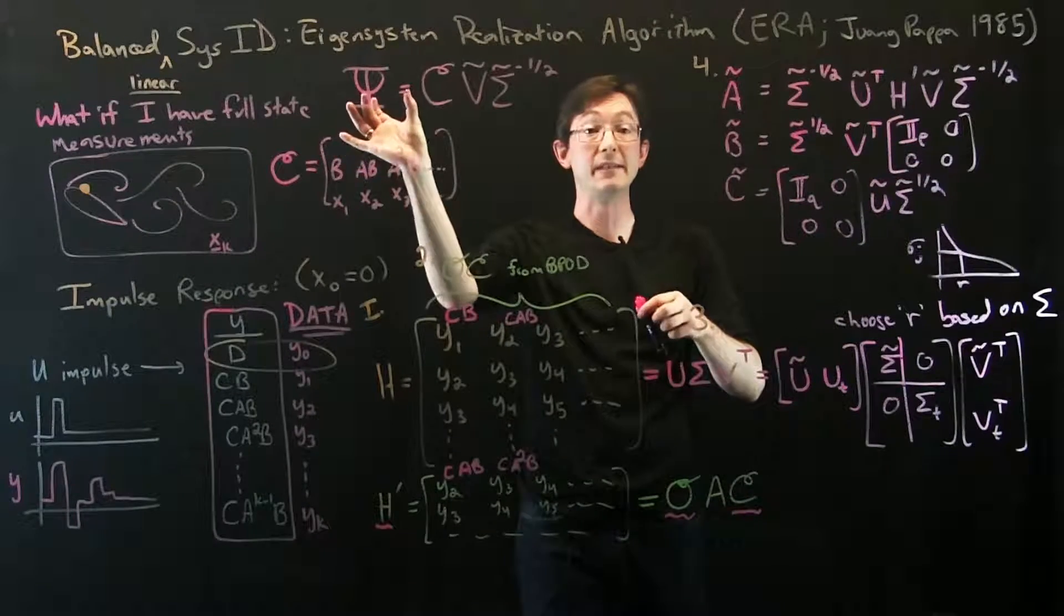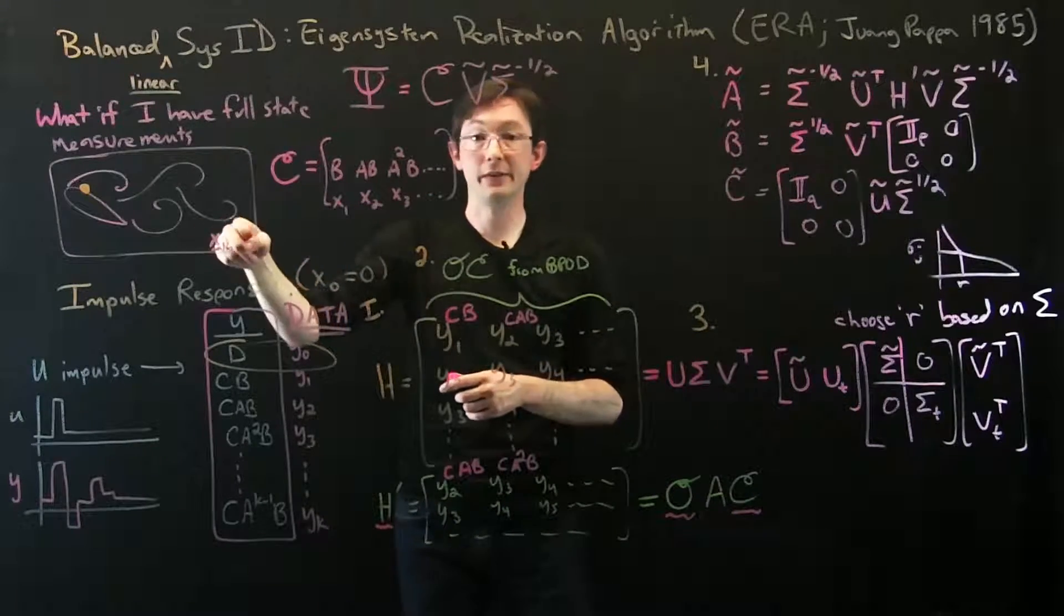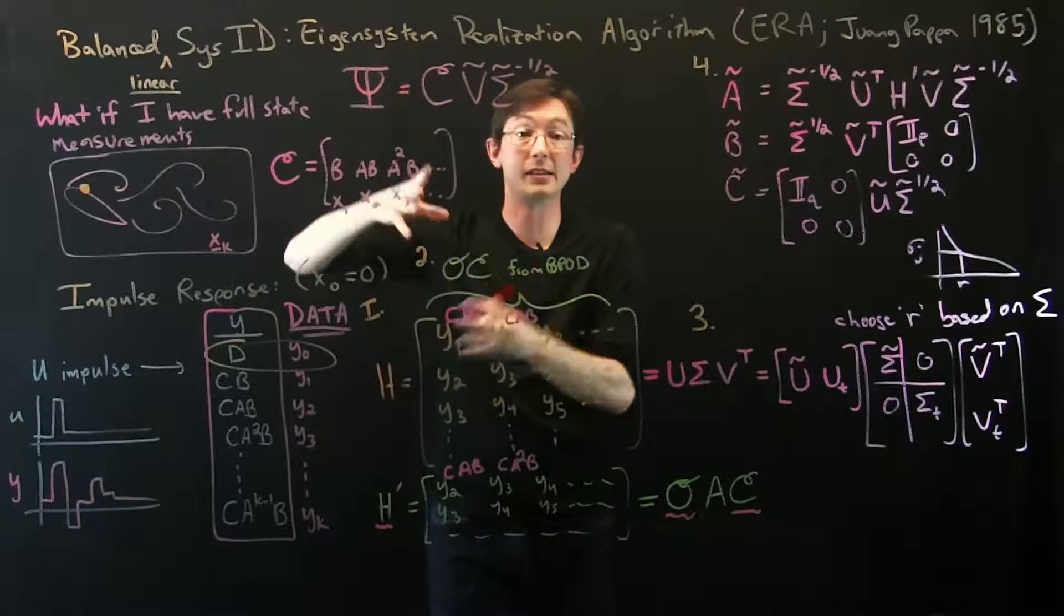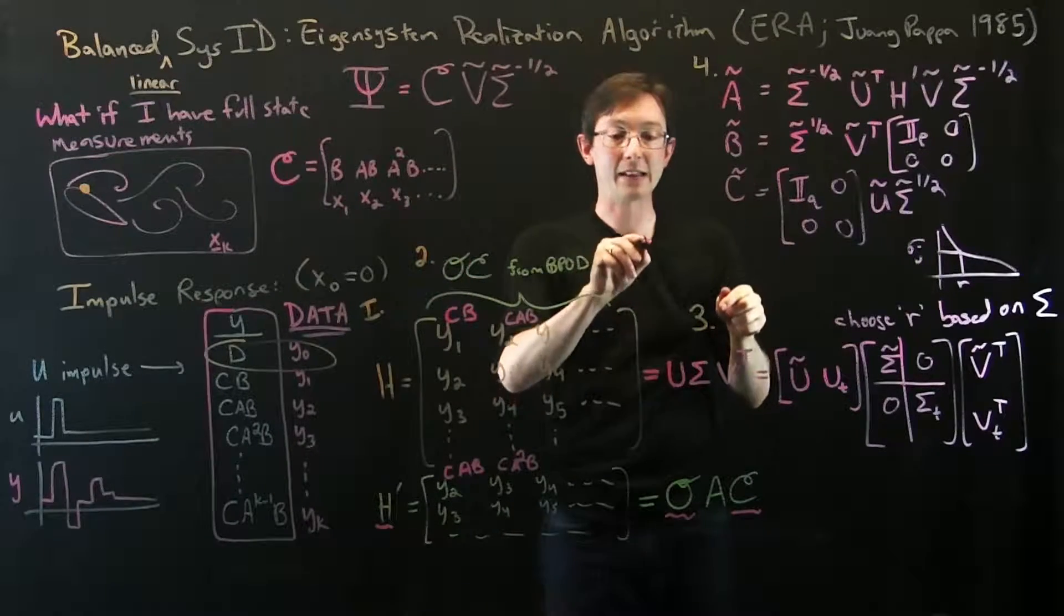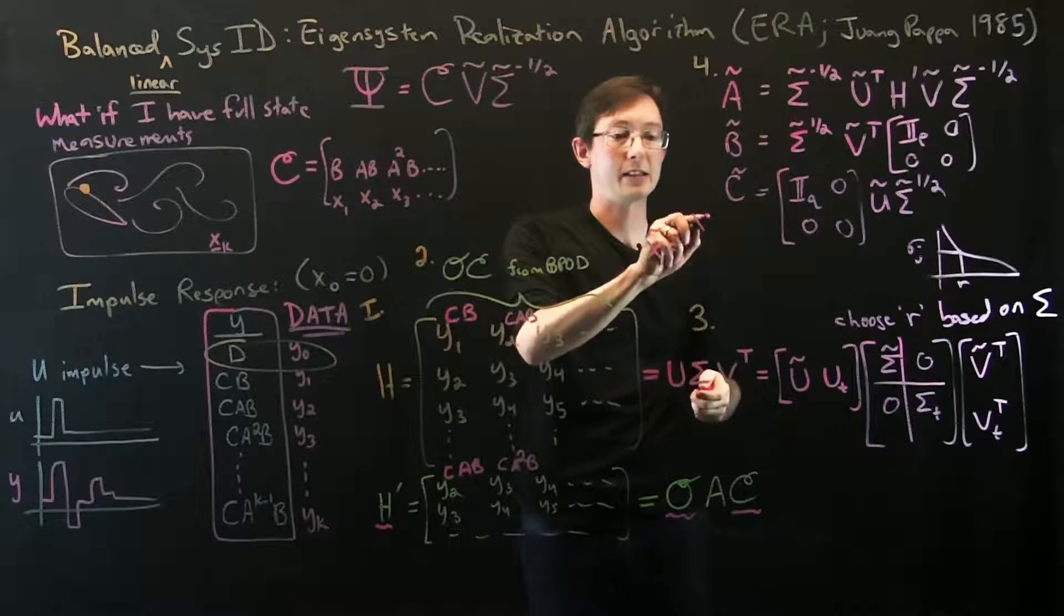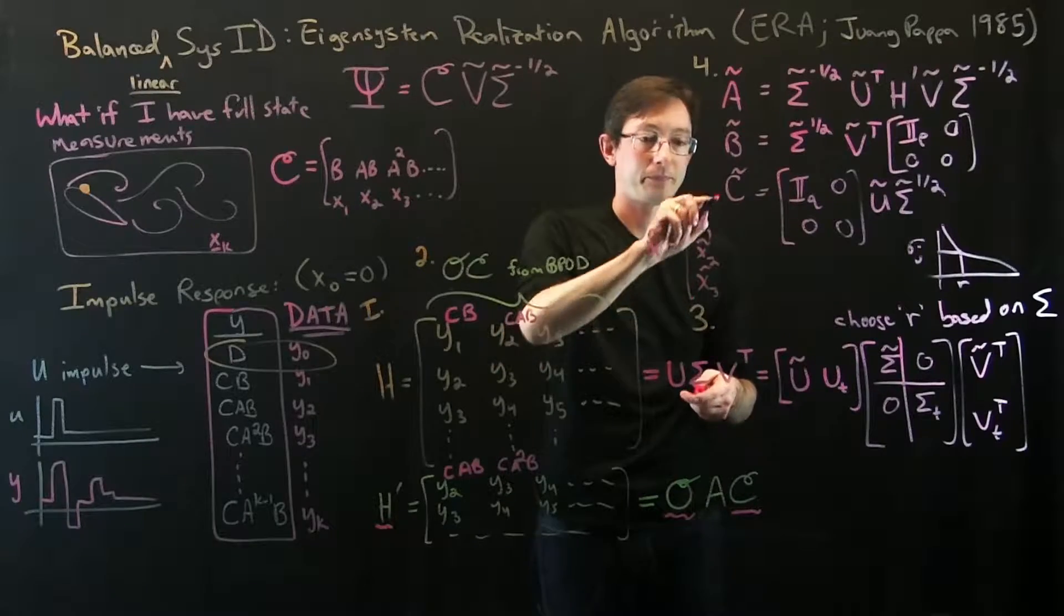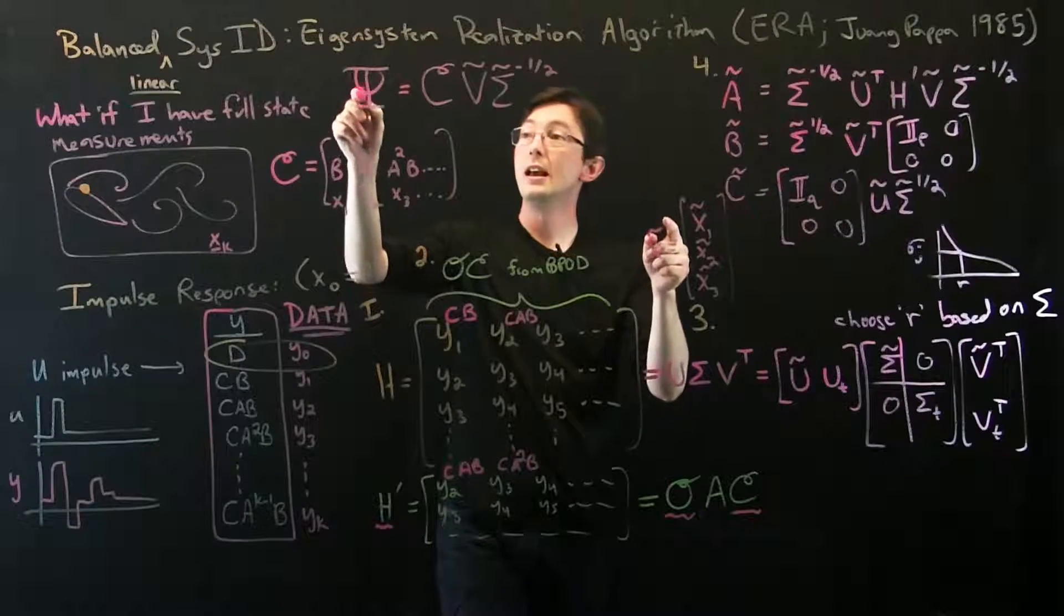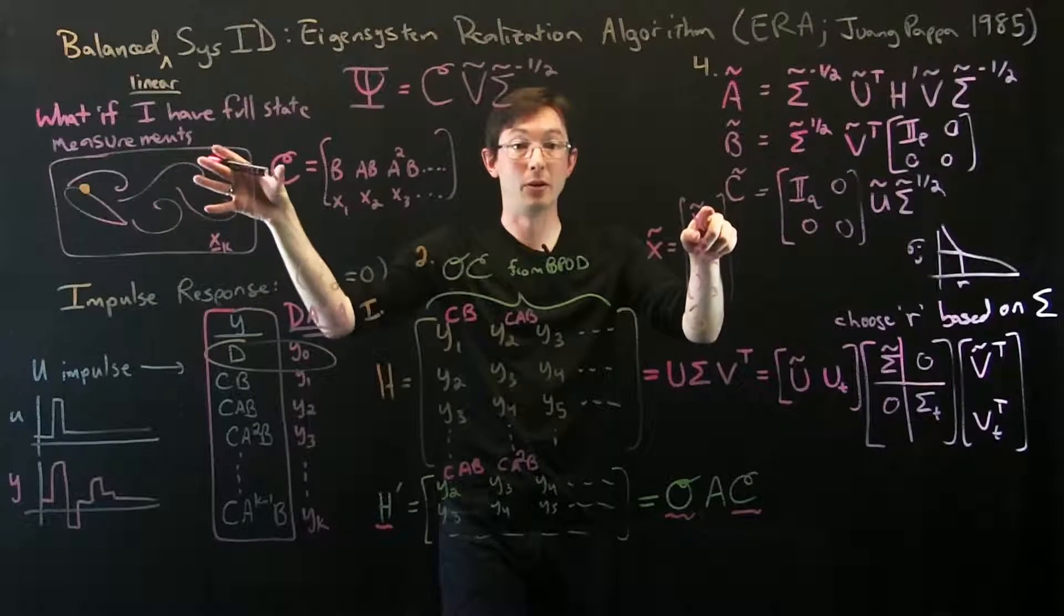I can take these reduced order V's and sigmas and I can build these full state modes. Every column of psi is the size of an X, it's a big vector that in this case would be a flow field picture. Every column of this is a mode and each of these modes is what those little X tilde states mean. So X tilde had, let's say, three modes: X1 tilde, X2 tilde, X3 tilde—there were three hidden states.